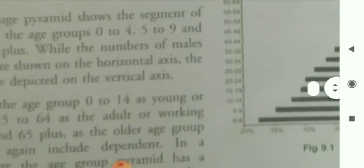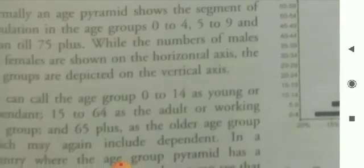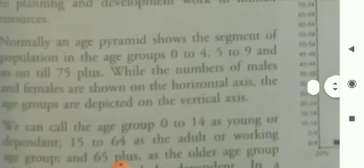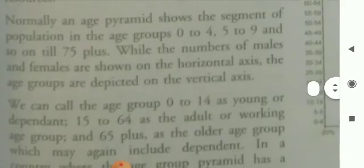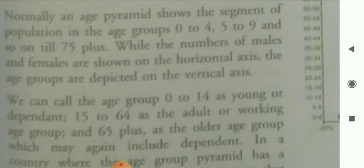Each group pyramid, vertical to horizontal, we shall study. This is the matter to study in the classroom on the blackboard through demonstration and proper explanation. But for your better convenience, this is shown here by your teacher. Normally, an age pyramid shows the segment of population in the age groups 0 to 4, 5 to 9, and so on till 75 plus.